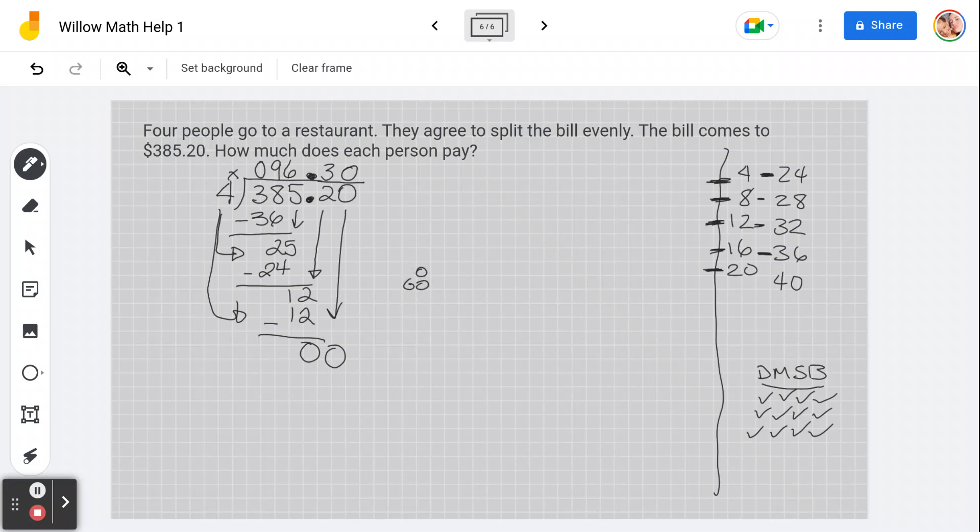Therefore, 4 people going out for dinner. Each person pays 9 pounds or dollars, whatever you want to do. 96 dollars and 30 cents. Ta-da!